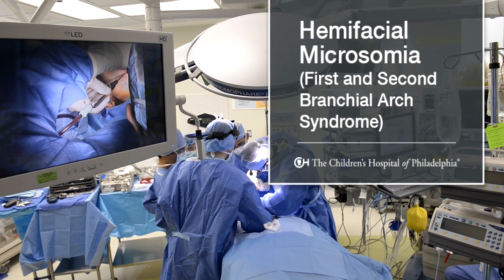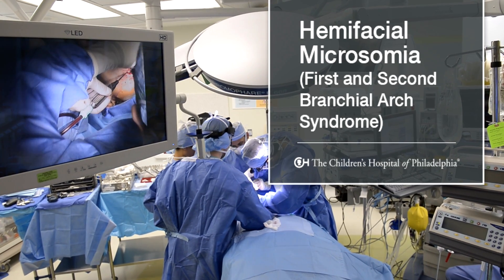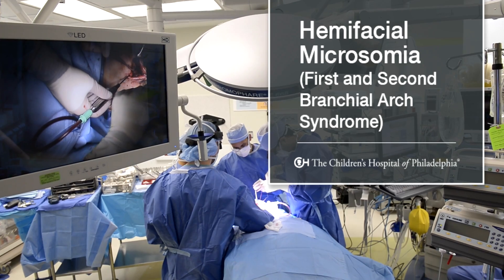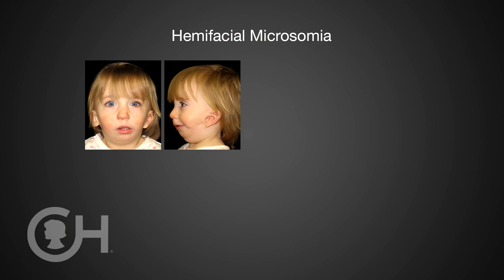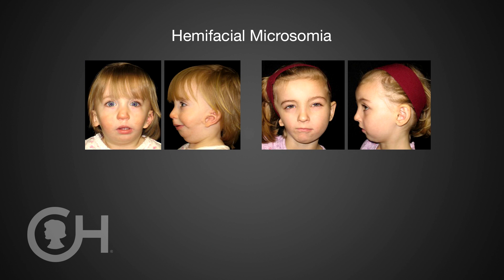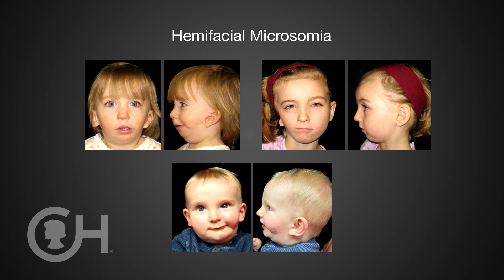Hemifacial microsomia, which is also known as craniofacial microsomia or first and second brachial arch syndrome, is the second most common condition of the head and neck in children after cleft lip and palate. We don't know what causes it, but what happens is an underdevelopment of one side of the face. In up to 20% of patients, this can be both sides. There are varying deficiencies of soft tissue and bone, which can include the ear, the lower jaw, the upper jaw, the soft tissue, and the nervous structure — ranging from very mild to almost complete absence of those structures.